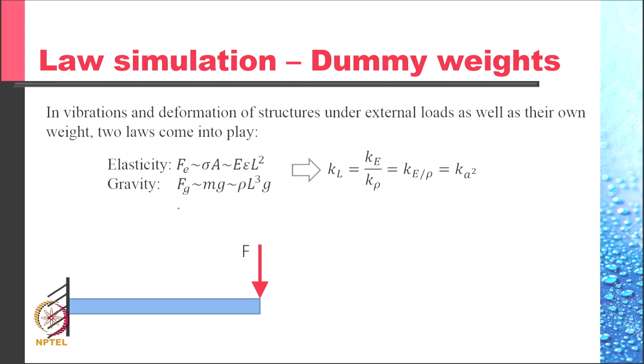So we must keep the length scale as kA². A is the wave speed. Now, for metals, the range of wave speed is very limited. We compare steel to an exotic material like silver, A² changes by a factor of 3 only. So the max value of kL that we can use is 3 if the model is made of silver. Obviously, that is not going to fetch us much returns. So we need to simulate the law of elasticity.